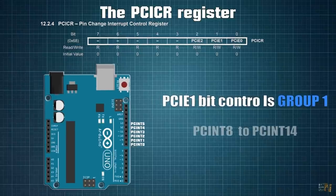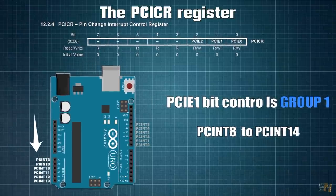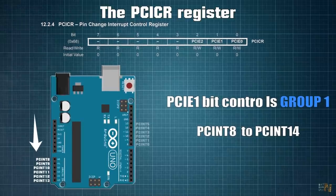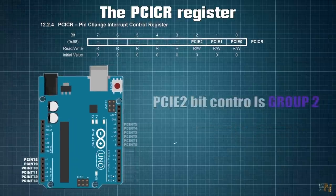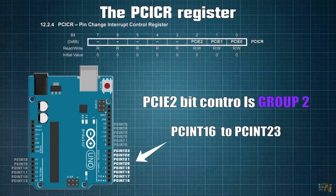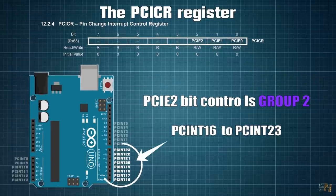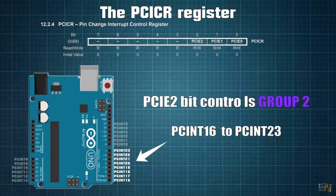PCIE1 controls the group of pins from PCINT8 to PCINT14 and those correspond to the analog pins of the Arduino A0 to A5. Finally, PCIE2 controls the group of pins from PCINT16 to PCINT23 and these correspond to digital pins of the Arduino D0 to D7.